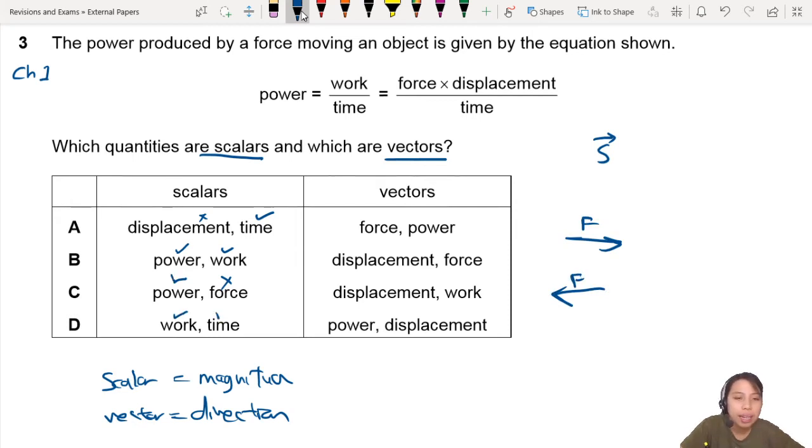Work, scalar. Time, scalar. So the thing that is out is A and C already. Now let's look at vectors. Force is a vector. Displacement is a vector.